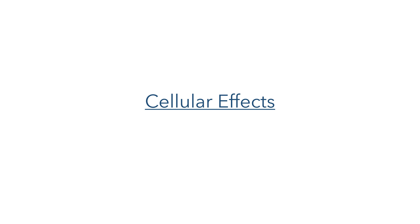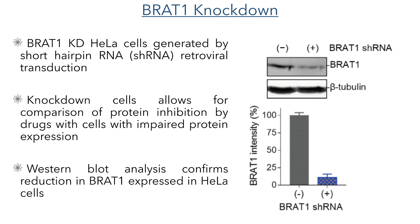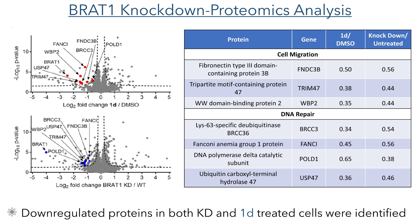Confident that they had accurately determined the curcuzone binding protein, the researchers moved forward to look at the effects these compounds have on cells. They first generated a BRAT1 knockdown — a cell in which the expression of a gene is reduced. They used a short hairpin RNA retroviral transduction to reduce the expression of BRAT1 protein in HeLa cells. This allowed the authors to compare cells that have BRAT1 inhibited by curcuzones with cells that do not express the protein. Western blot analysis was used to confirm that the knockdown successfully reduced the amount of BRAT1 produced.